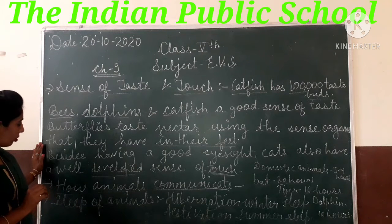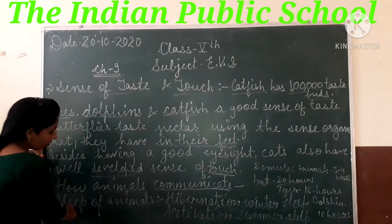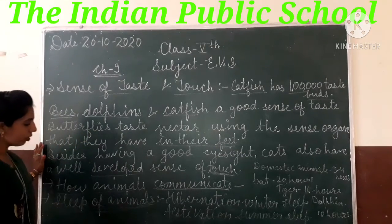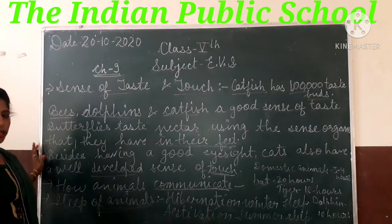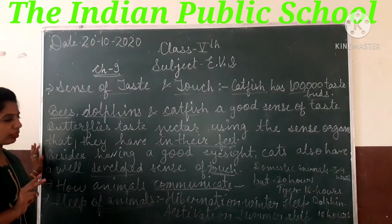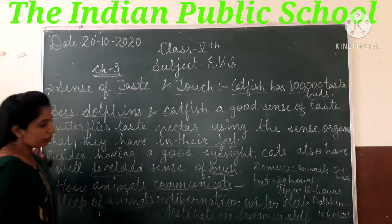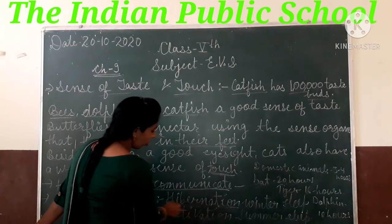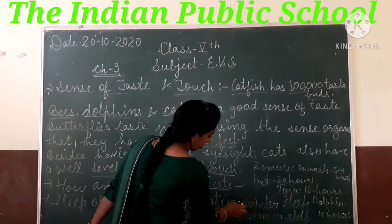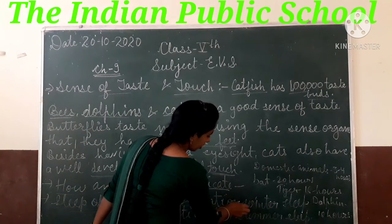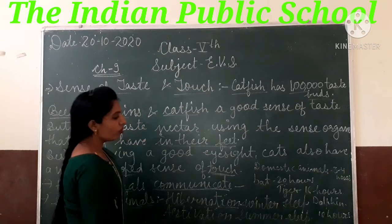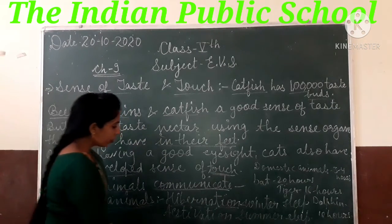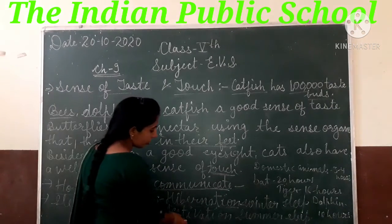Sleep of animals — animals के सोने के तरीके। Students, animals में दो प्रकार की sleeping पाई जाती है। First is hibernation, जिसको हम winter sleep भी कहते हैं, यानि की यह animals winter में सोते हैं। दूसरी होती है estivation, जिसको हम summer sleep भी कहते हैं।